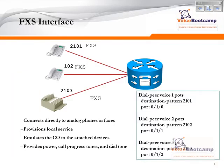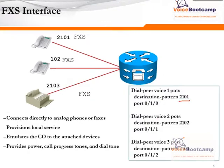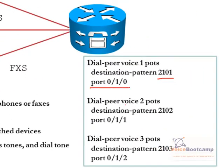In the Cisco router, to assign an extension to the phone, we must create dial pairs. A dial pair allows us to assign an extension to that particular port. So when this router receives a call to extension 2101, the router will instruct the process to send the call to this particular port.